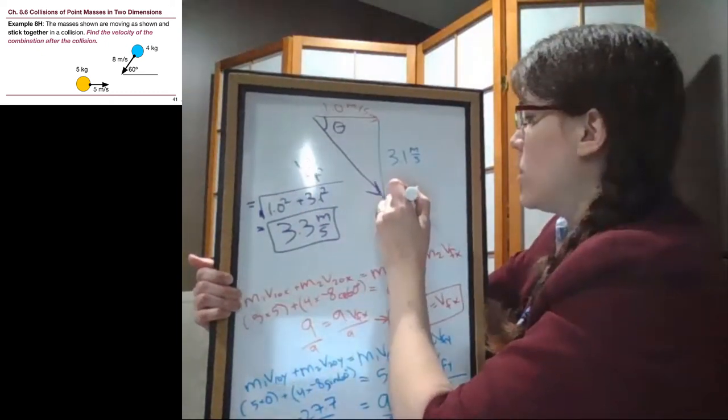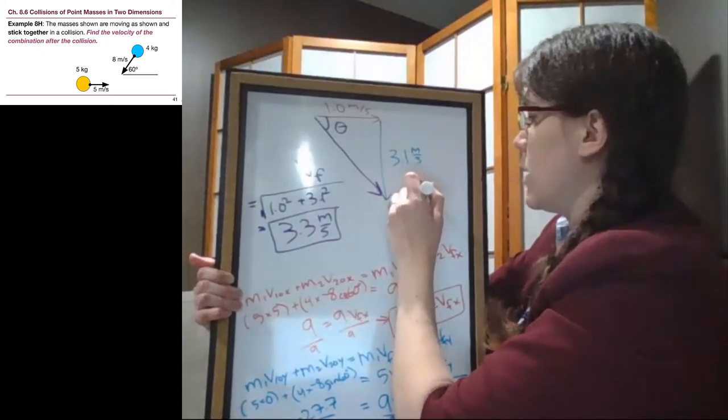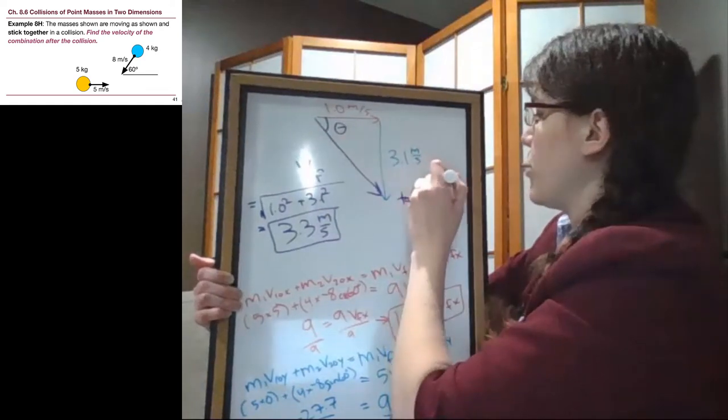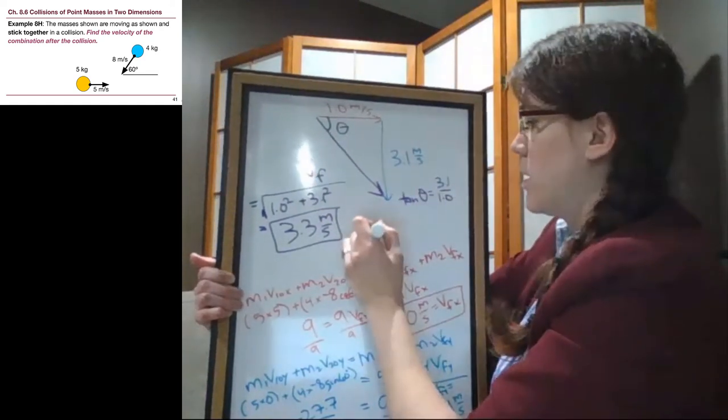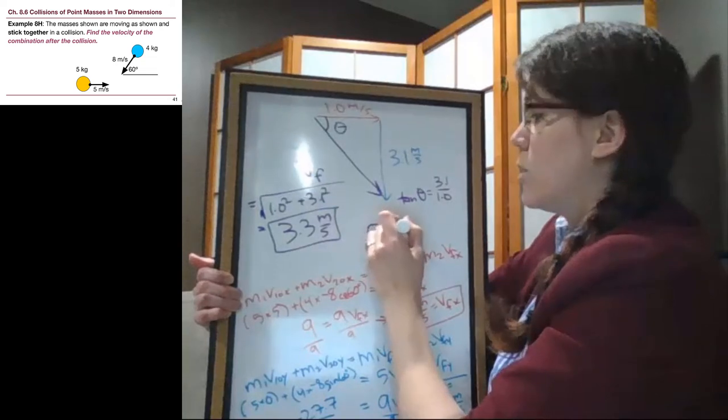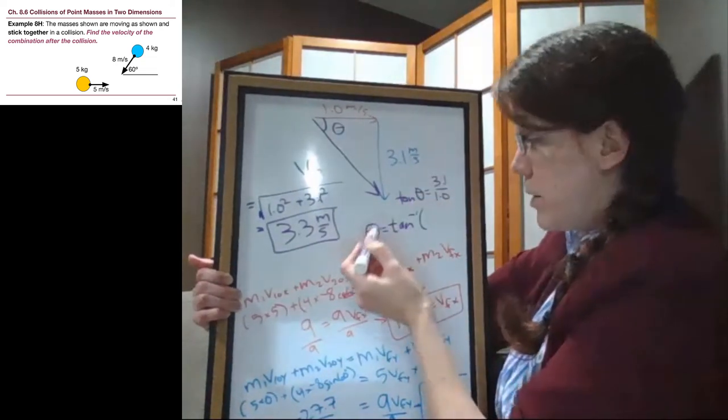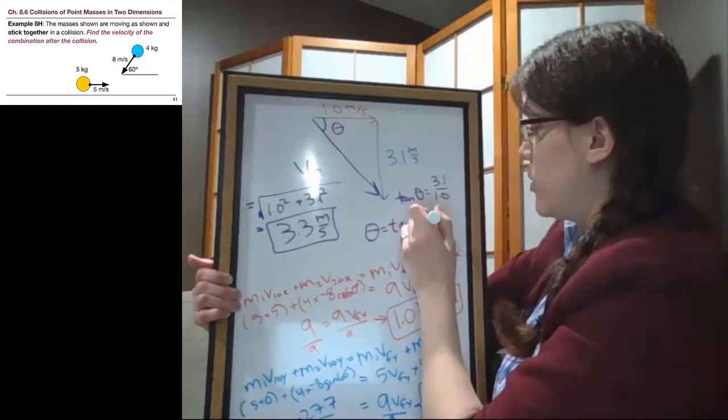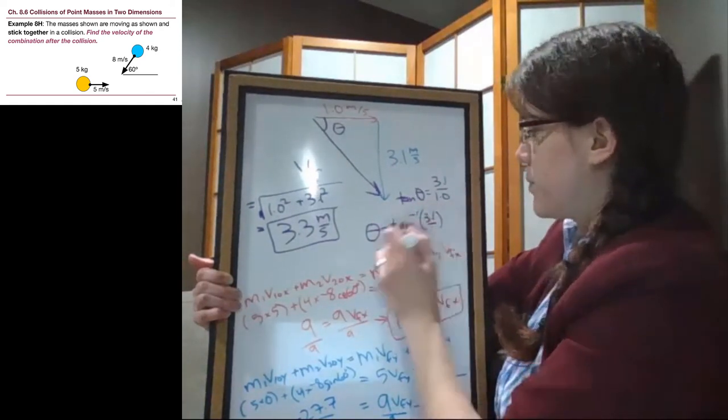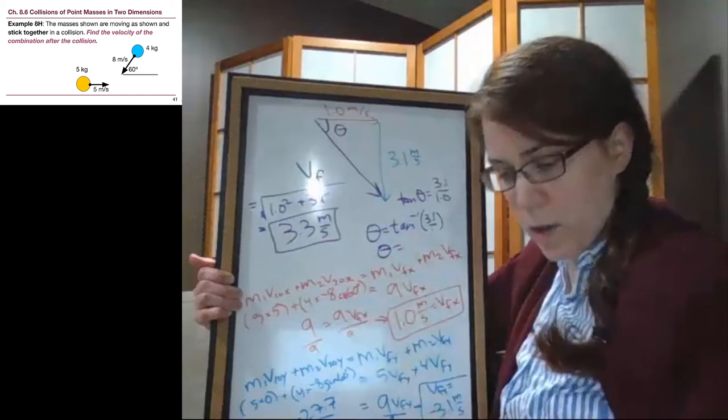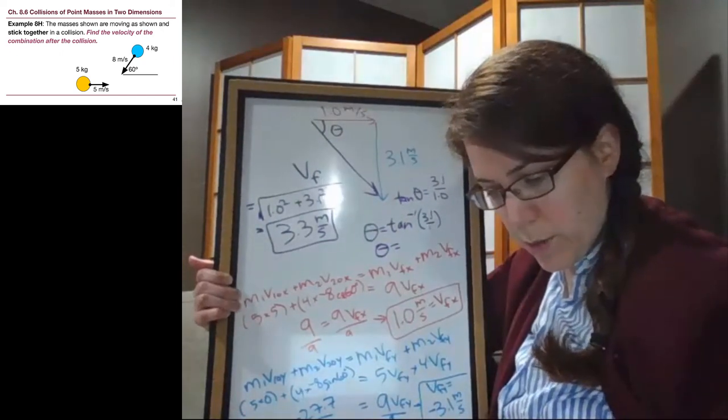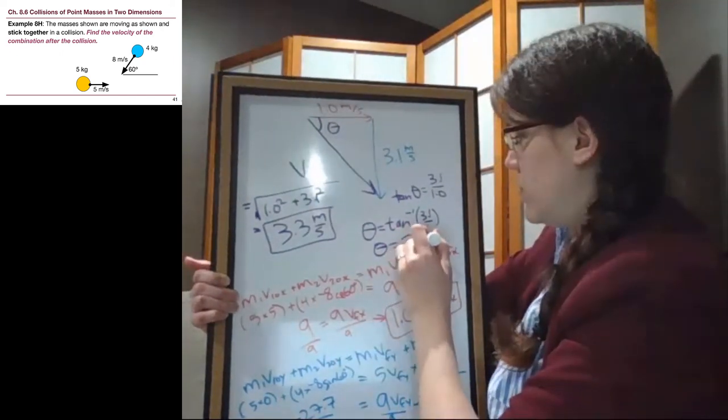And then for the angle, the tangent of this angle is the opposite, 3.1, over the adjacent. And so the arc tangent is going to be, the angle is the arc tangent of 3.1 over 1. And so that angle, the arc tangent of 3.1, is 72 degrees.